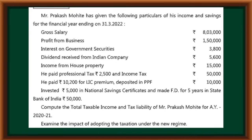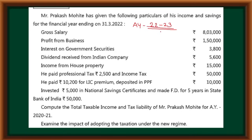So see here, this is the question. Mr. Prakash Murthy has given the following income for the financial year ending 2022. So let's see how we know how to do it. New regime and old regime — 2 regimes: 1.5 lakhs and 1.3 lakhs. They have given the financial year 2022. What will be the assessment year? It should be 2022-23.